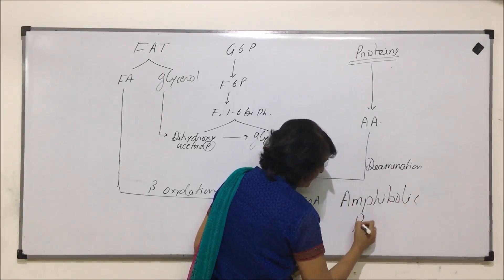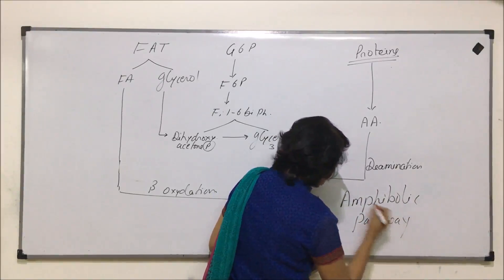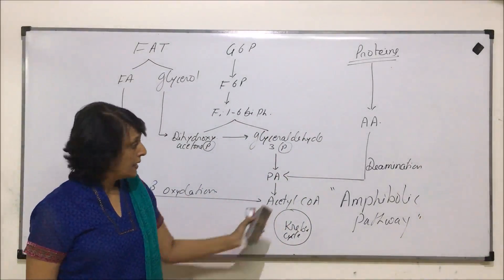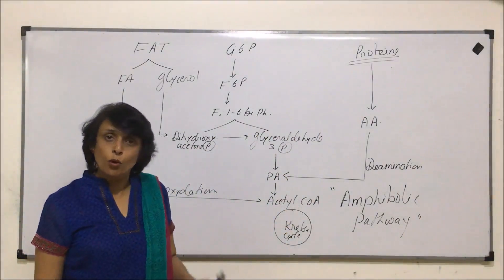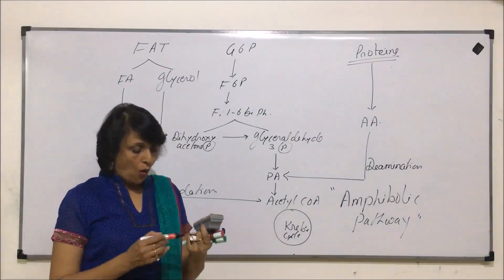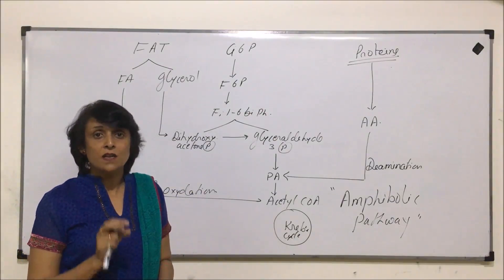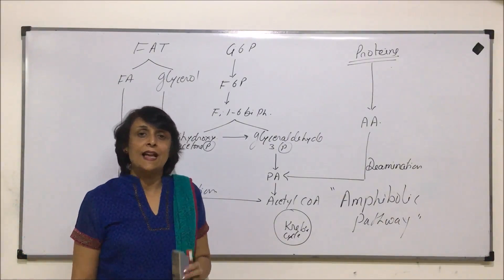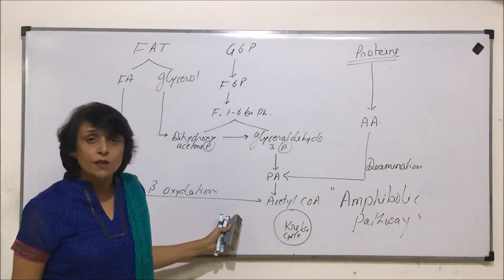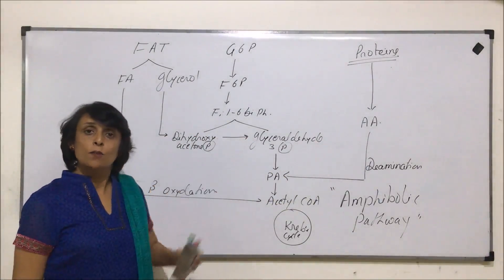And that is why respiratory reactions are known as amphibolic. Reason is there is catabolism as well as anabolism. Both type of reactions are seen in these respiratory reactions. So all three substrates act as respiratory substrates. Preference is carbohydrate first followed by fat and last is protein. Energy obtained from these is variable again depending upon how many amino acids and what type of fat is getting broken down.